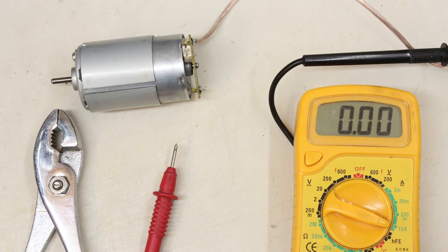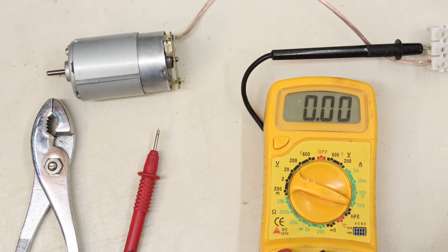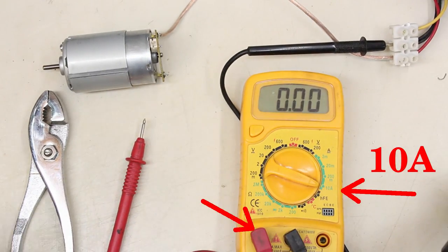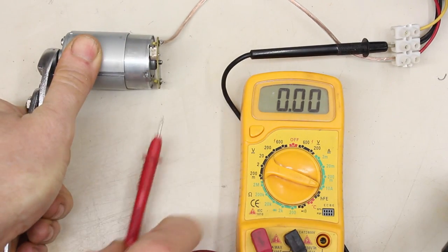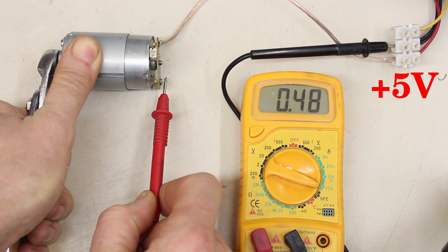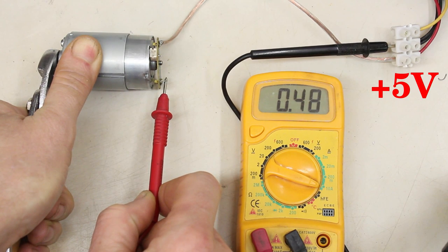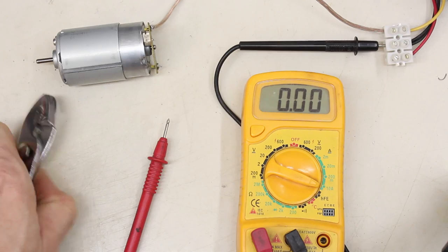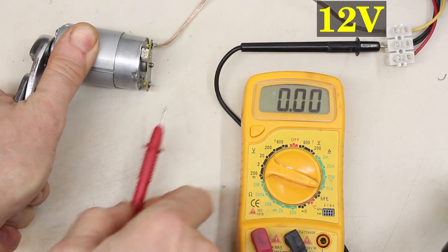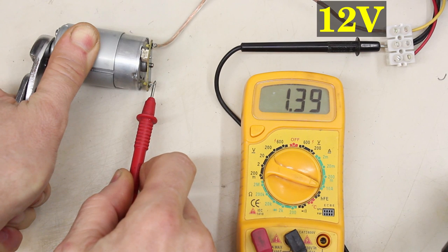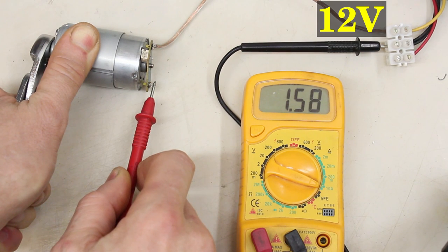Switch your multimeter to the highest current range that is 10A at this device and plug the red cable into the high amp connector if needed. This motor consumes almost 500mA at 5V and 1.6A at 12V, thus you can operate this motor at 12V with the L298N bridges. The maximum electric power consumed by the motor is 19W.